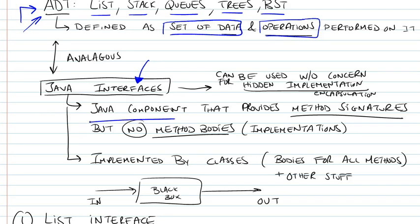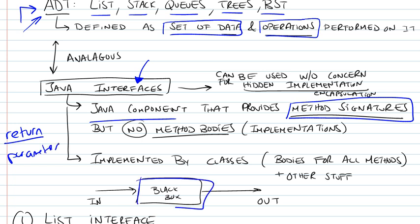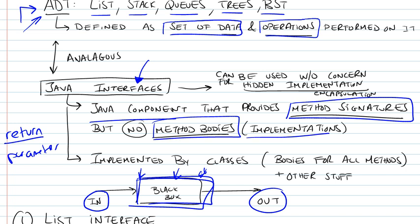The Java interface is a component that will specify all the method signatures. A method signature will have the return type, whatever that function returns, and the parameters that it takes. If that was the black box of a certain operation, you're specifying what goes in and what comes out without any concern for the implementation inside. This is the body of the method or the implementation, and we're leaving it to someone else who's going to define a class and implement that interface.